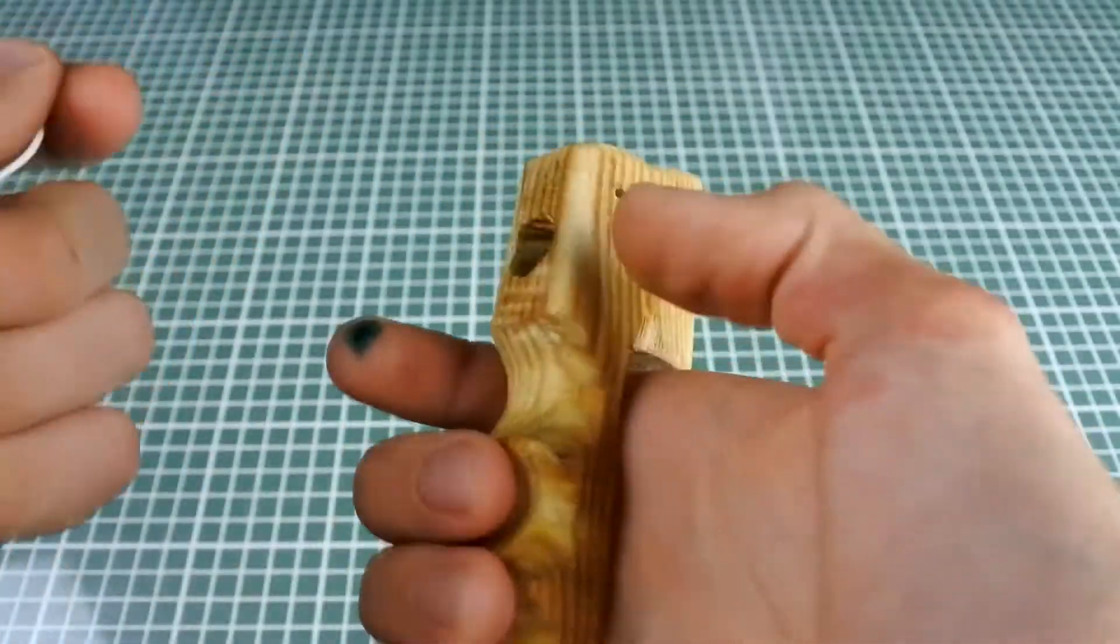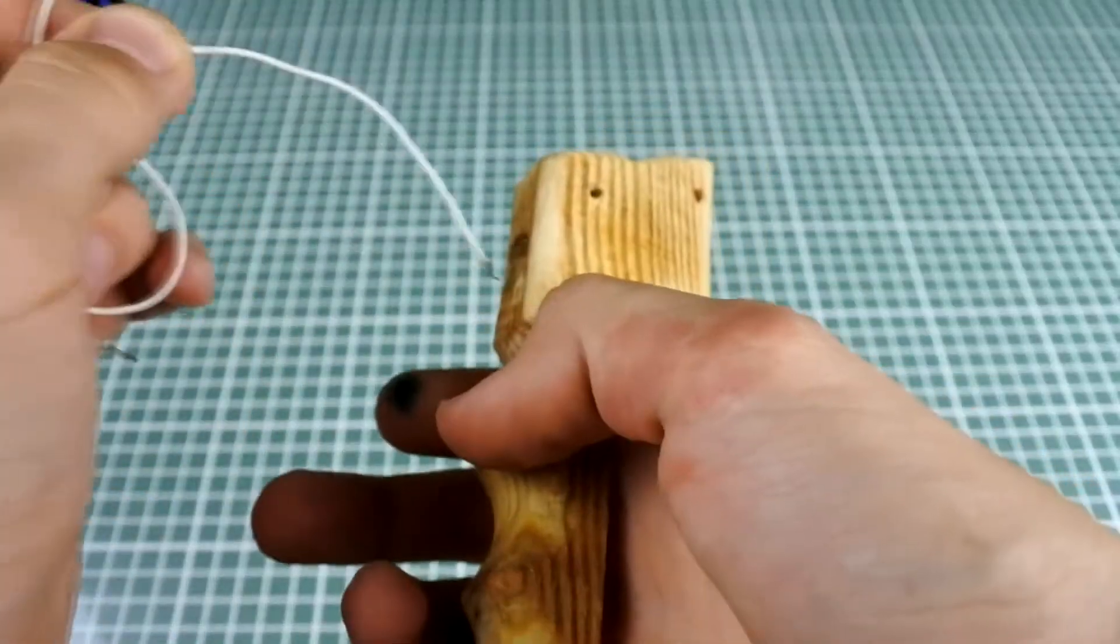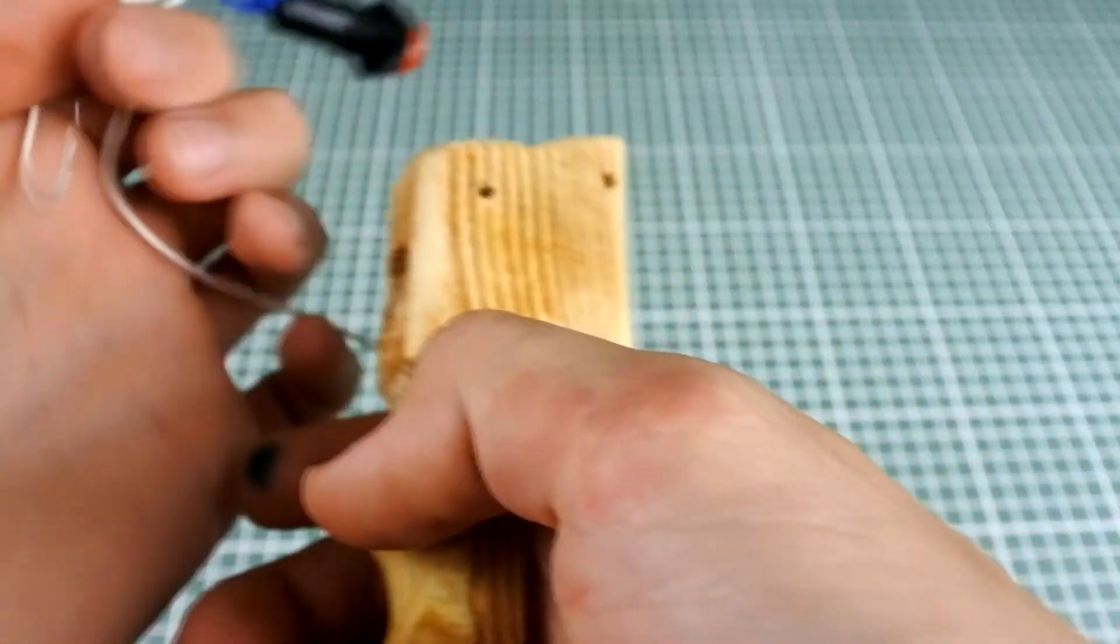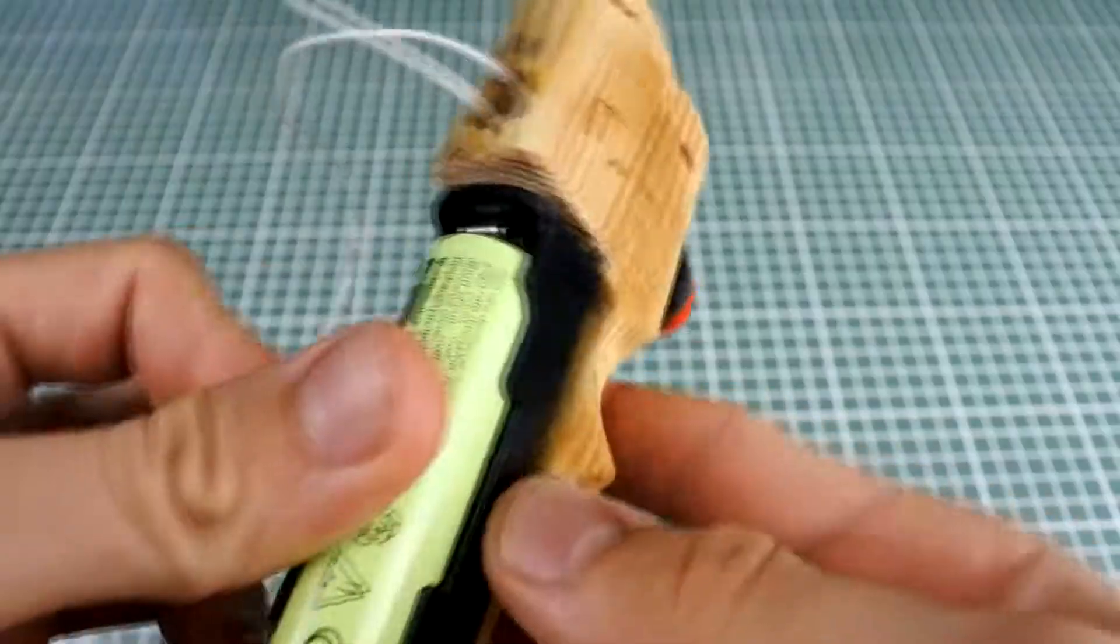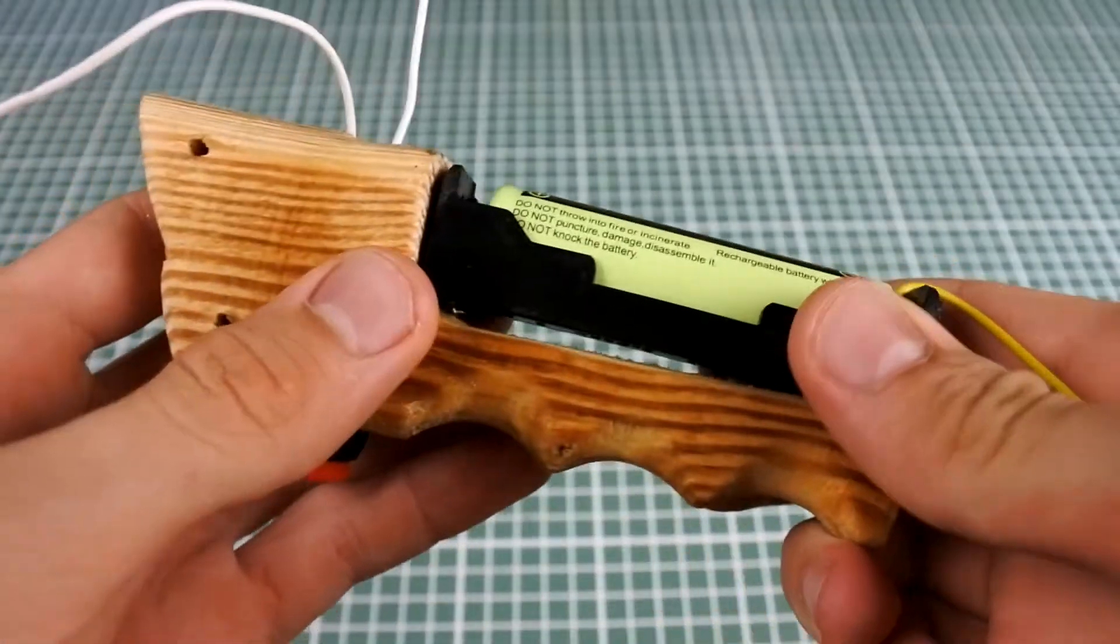Now from piece of wood I made such handle, on which I am going to fasten a button. And also one battery 18650.